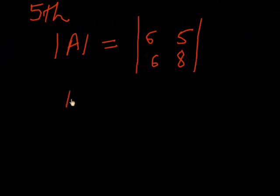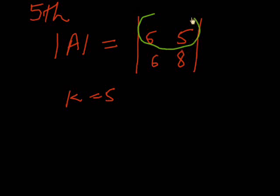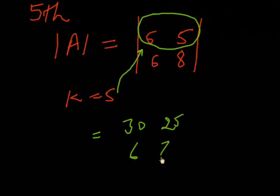Suppose k equals 5 and we multiply the first row by it. So we get 6 times 5 equals 30, and 5 times 5 equals 25, giving us |30 25; 6 8|. The determinant will be multiplied by 5.